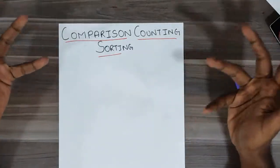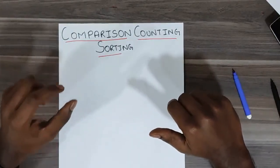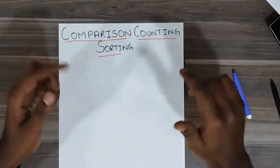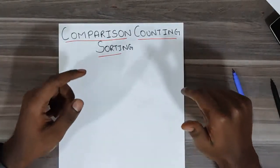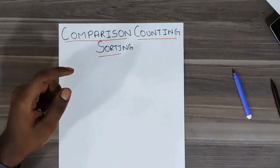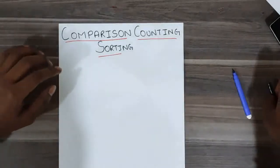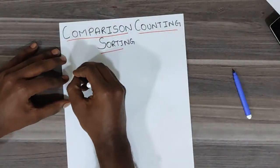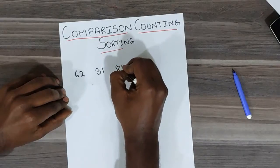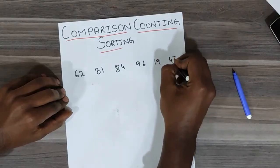Now let's see what exactly happens in comparison counting sorting. For each element in the list, we will count the total number of elements which are smaller than that element, and these counts will act as the position for the elements in the sorted list. Let's understand it with an example. Consider we have an array: 62, 31, 84, 96, 19, and 47.